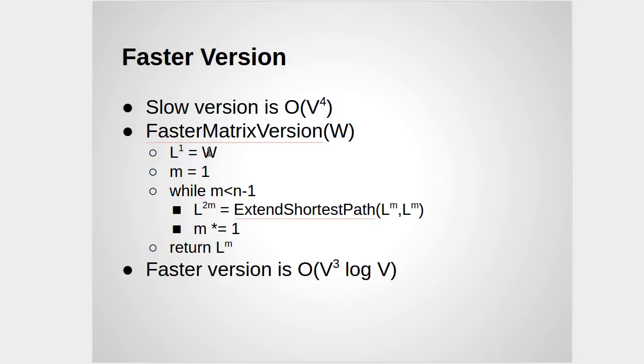So you'll note here, we start off with our original graph weights being an L. But then the way we extend it is we square. So we go from what you can get in one step to two. The slow algorithm then goes to three. This fast algorithm basically goes to four and then to eight and to 16. And you wind up going too far, in a sense, but you do it through a log number of multiplications. And so the faster version is V³ log V. We'll run through and kind of see how this works in the next video.